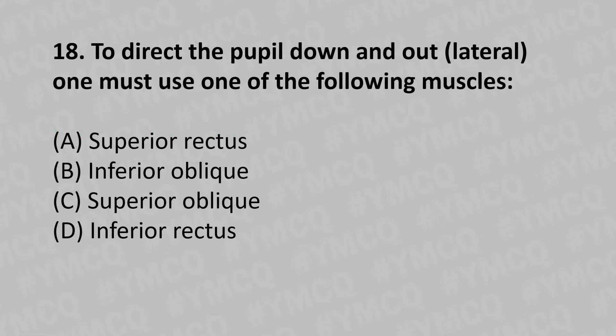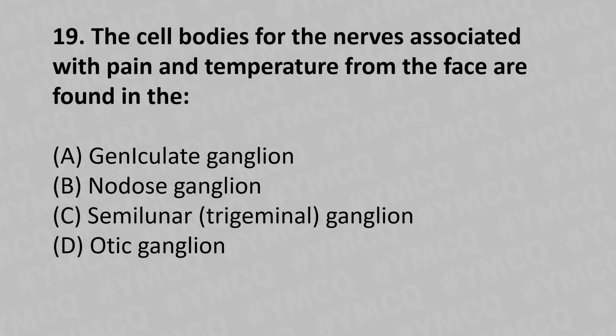Moving to our eighteenth question: to direct the pupil down and out laterally, one must use which of the following muscles? Option A: superior rectus. Option B: inferior oblique. Option C: superior oblique. Option D: inferior rectus. The answer is Option C: superior oblique.